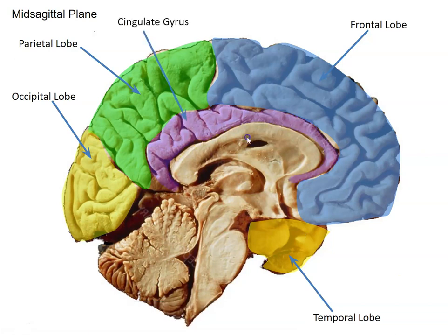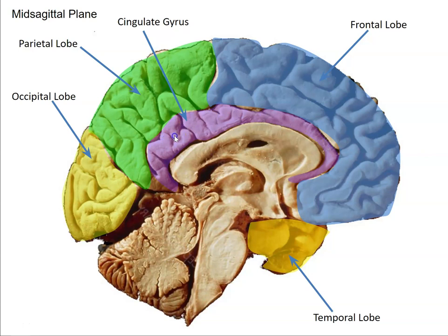Here is the cingulate gyrus. Cingulum is a Latin word for belt, and you can see this forms a kind of belt around the structures below. We're going to read a research article that uses ERPs — event-related potentials — to record the activity in this part of the brain under different circumstances.